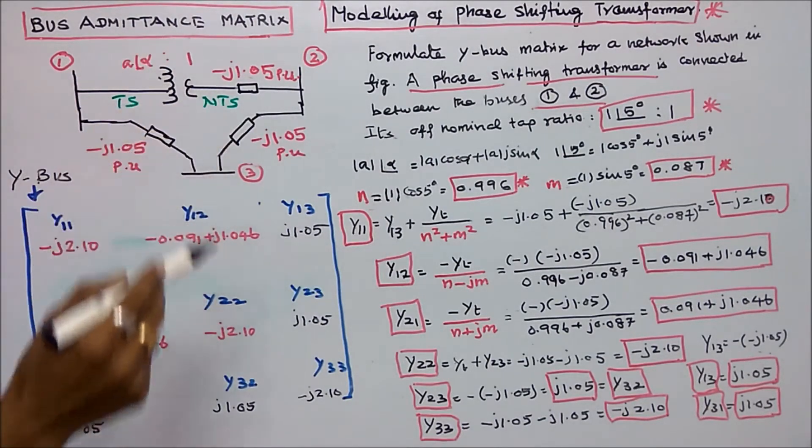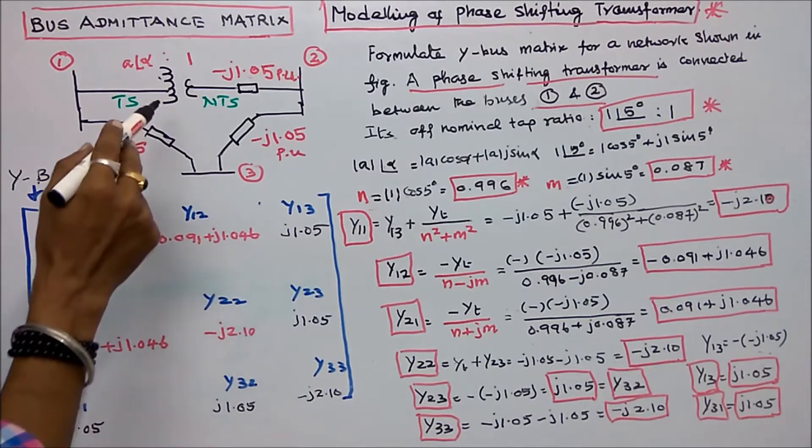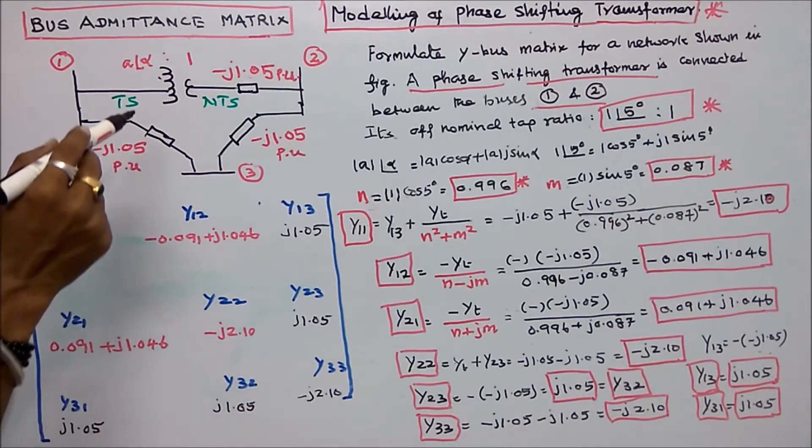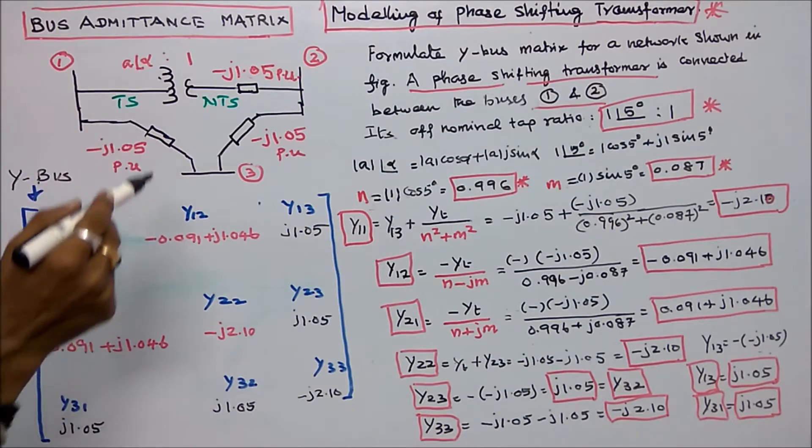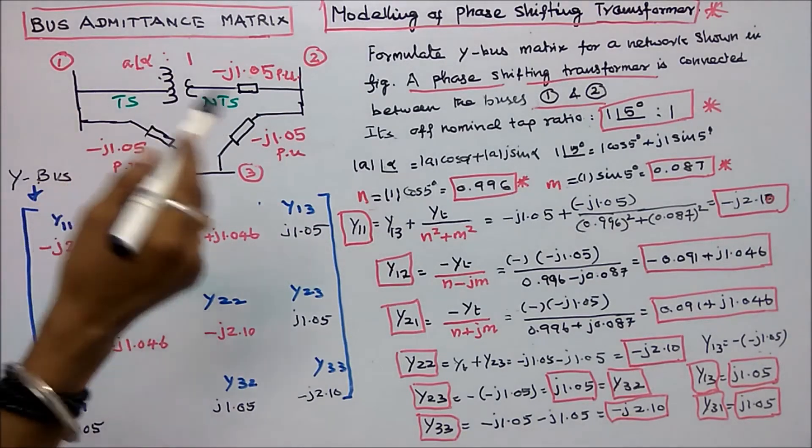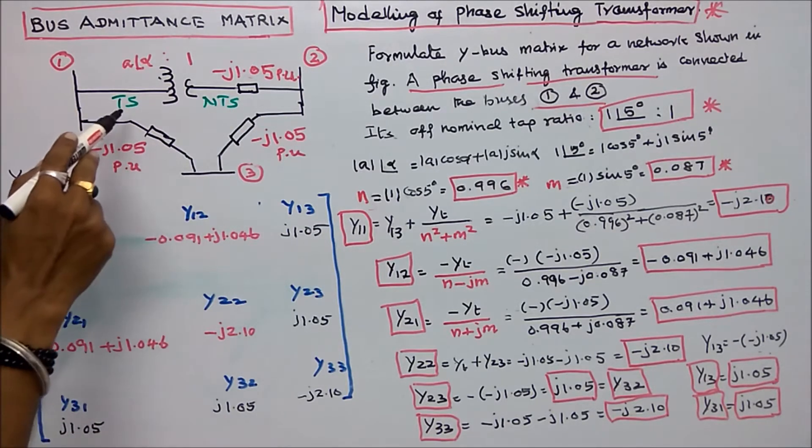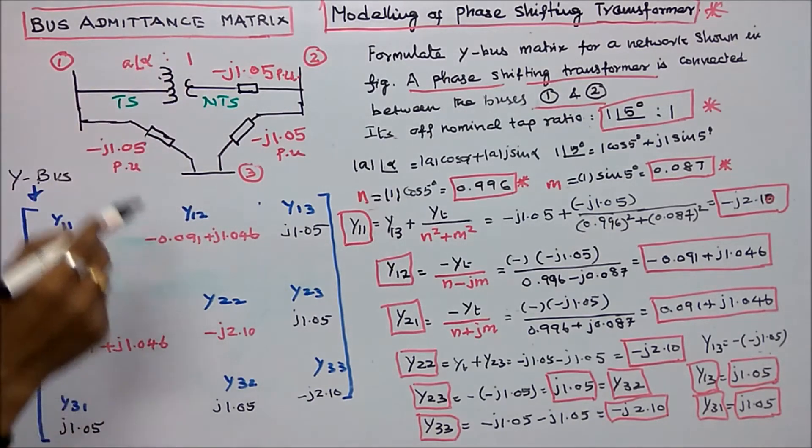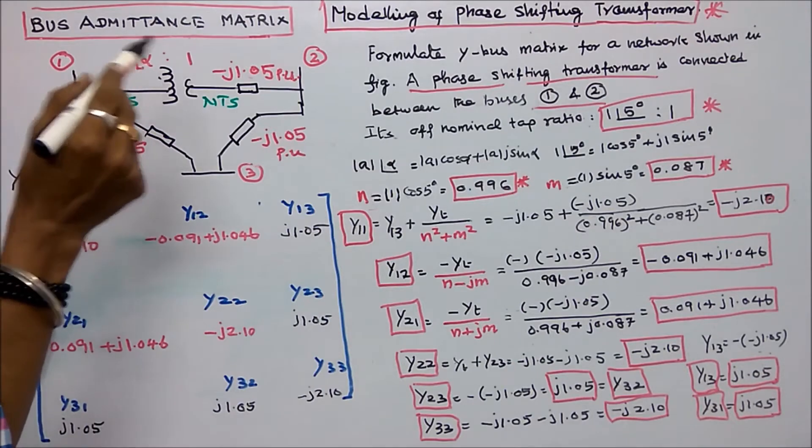This network consists of three buses, one phase shifting transformer and three lines. The phase shifting transformer of nominal tap ratio, magnitude is 1, angle is 5 degree. The tap setting side to the non-tap setting side is 1. Therefore, one angle 5 degree is to 1.